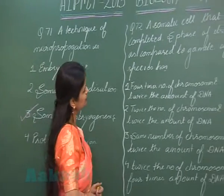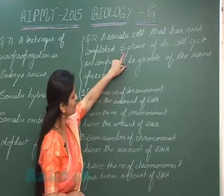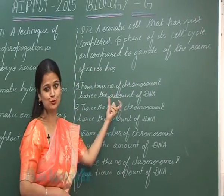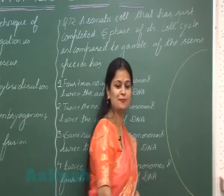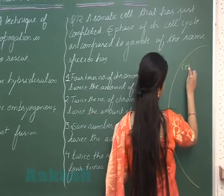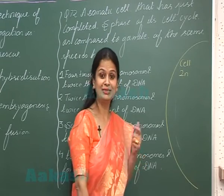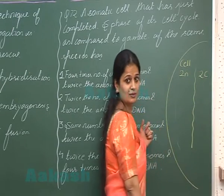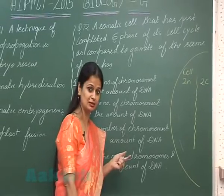Question number 72: a somatic cell that has just completed the S phase of its cell cycle — as compared to a gamete, what will be the number of chromosomes and the DNA content? If the cell is forming gametes, it means that the somatic cell is diploid, so the DNA content is 2C.